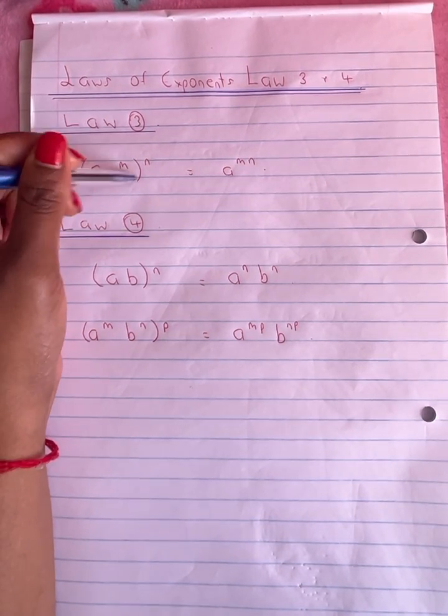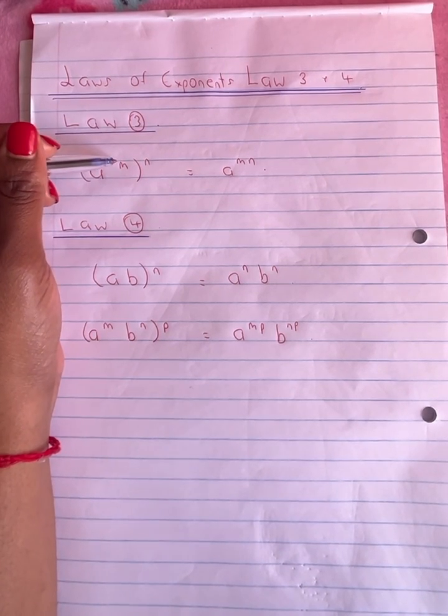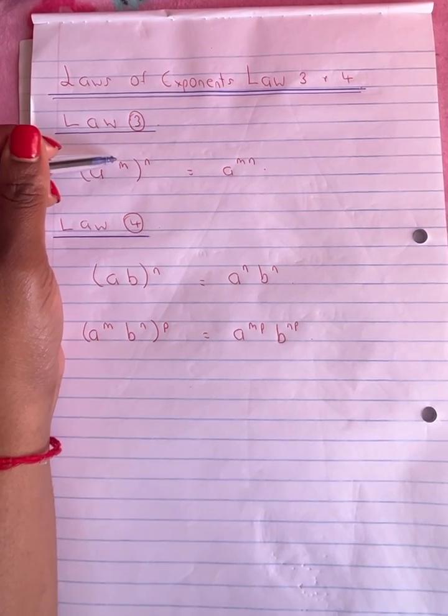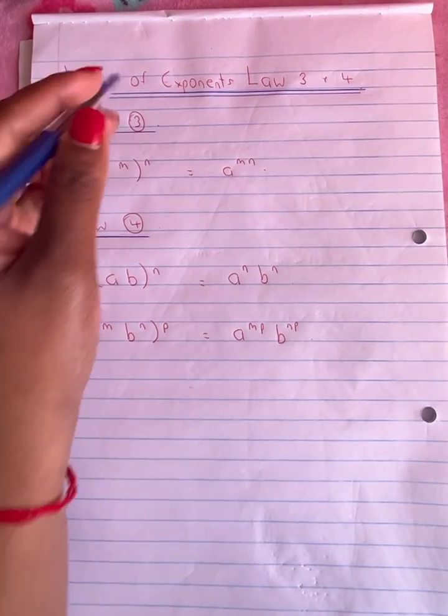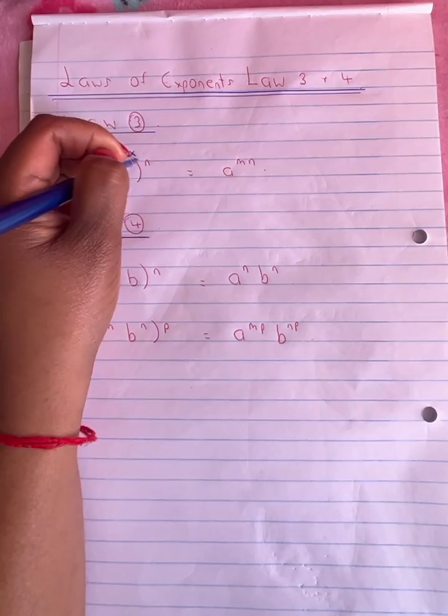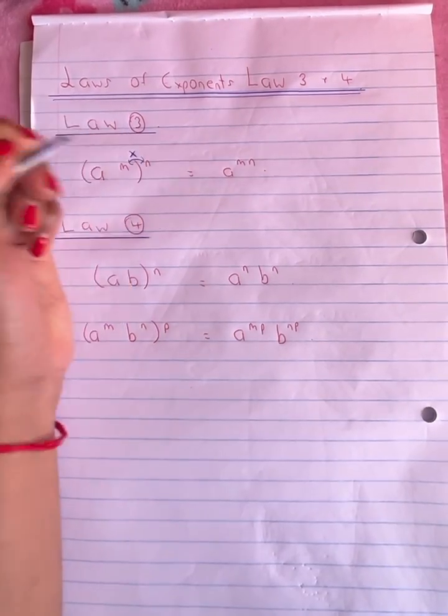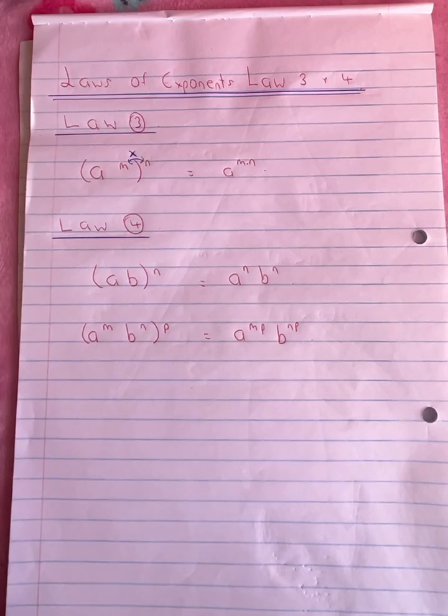So if you have a case here where we have a base inside a bracket raised to a power inside a bracket and raised to a further power outside the bracket, we just need to multiply across the exponents. These two exponents will be multiplied together to give you a total value.